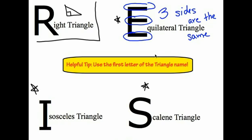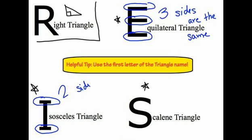Moving down to the isosceles triangle and looking at that I — we have two lines in the I that are the same: the top of the I and the bottom of the I. Therefore, in an isosceles triangle, only two sides are the same.